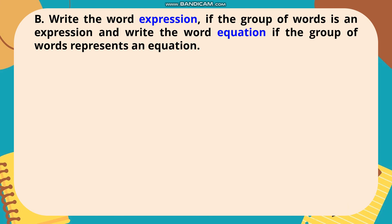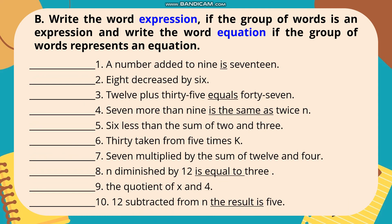Letter B — write 'expression' if the group of words is an expression, and write 'equation' if the group of words represents an equation. Number 1: A number added to 9 is 17. Answer: Equation. Number 2: 8 decreased by 6. Answer: Expression. Number 3: 12 plus 35 equals 47. Answer: Equation. Number 4: 7 more than 9 is the same as twice N. Answer: Equation. Number 5: 6 less than the sum of 2 and 3. Answer: Expression.